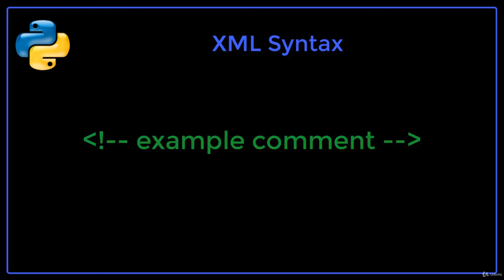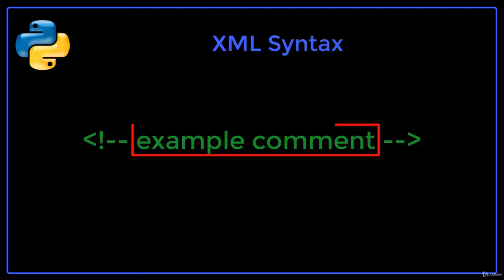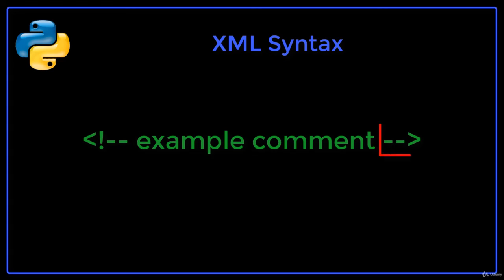Comments in XML are written as follows. They start with an opening angular bracket, followed by an exclamation mark and two hyphens. Then comes the text of the comment. Finally, two hyphens and a closing bracket signify the end of the comment.